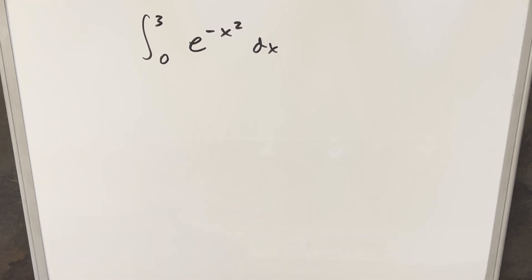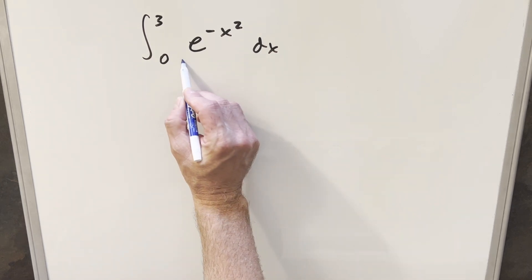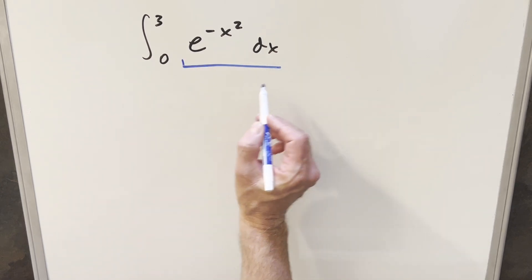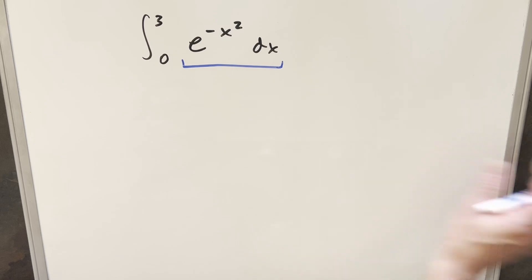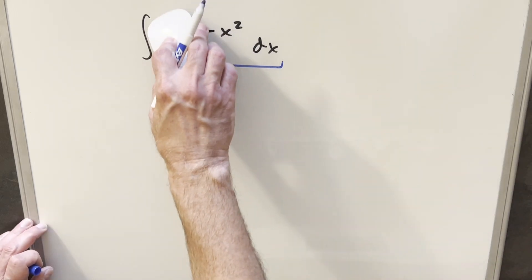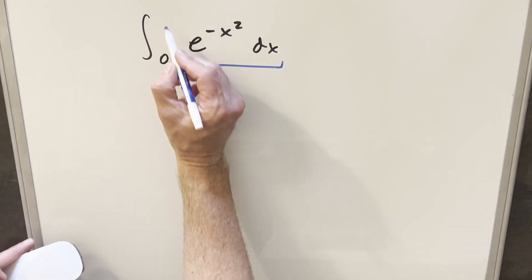This one can be kind of nice or kind of frustrating depending on your perspective. The thing we notice here is if the bounds were different, this is just the Gaussian integral, like the Gaussian integral is going to be when this upper bound is infinity.